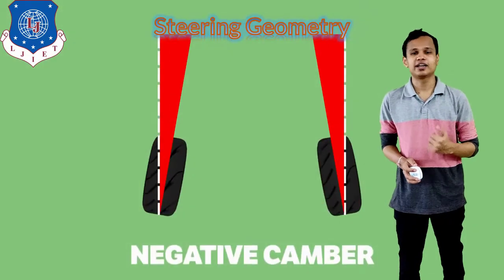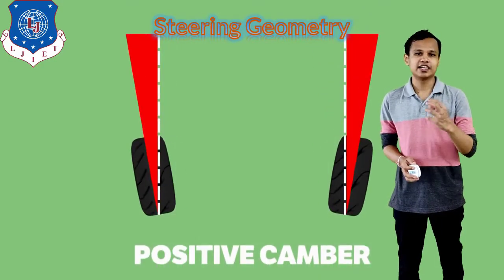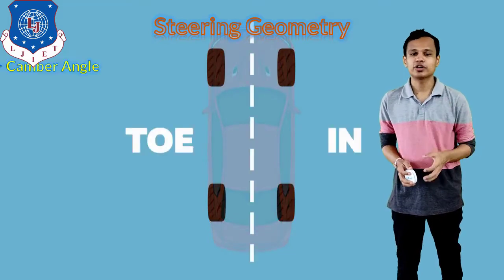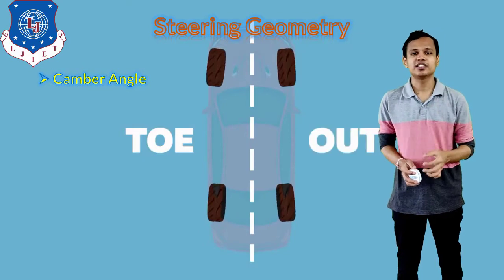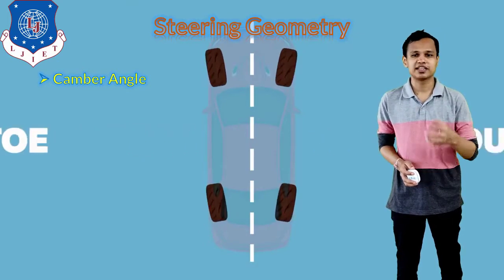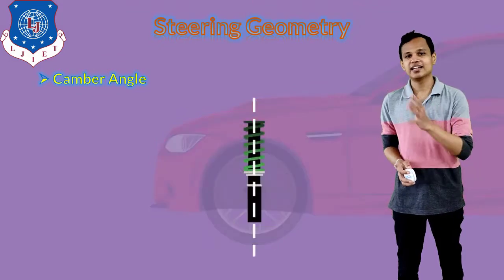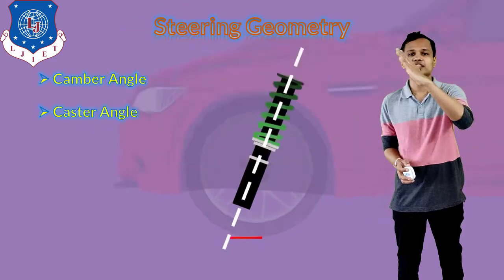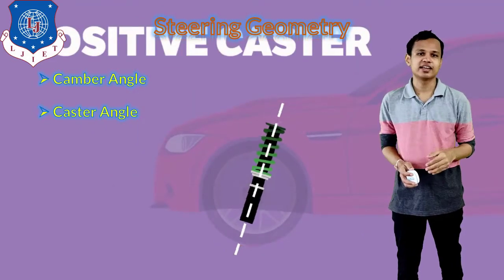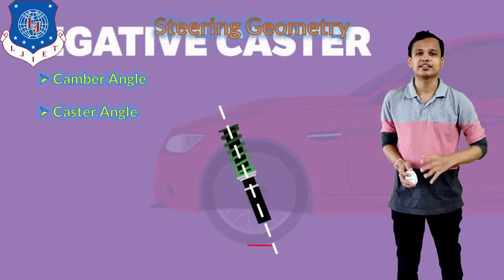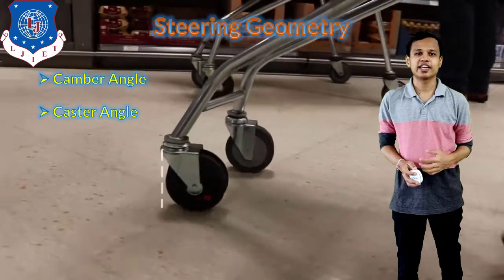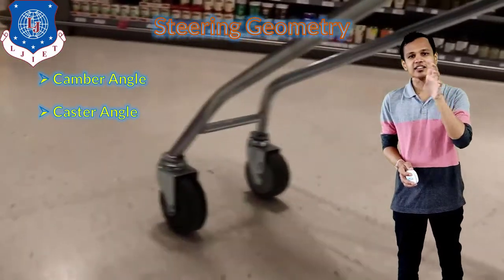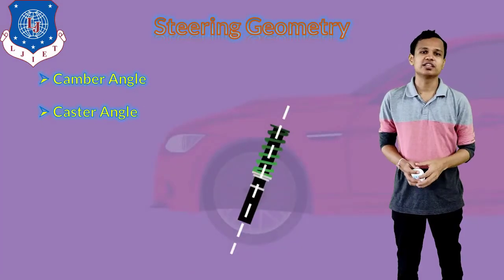In case of steering geometry, you might have seen the camber angle — that is positive and negative angle. Second is toe-in and toe-out. Third is the castor angle, which can be a positive or negative castor angle depending on the steering axis direction. If it is inward then it is positive; if it is on the outward side then it is negative castor. Negative castor can be seen on a trolley in the background, while all vehicles have positive castor.